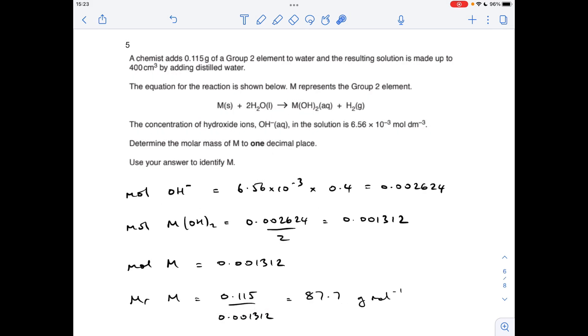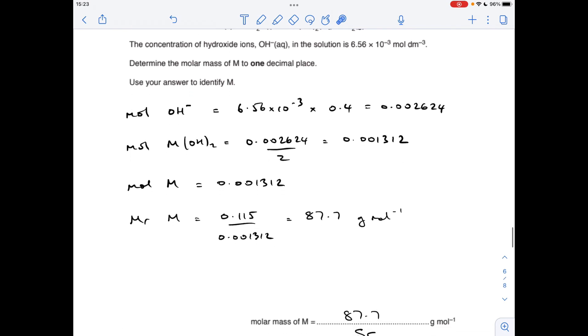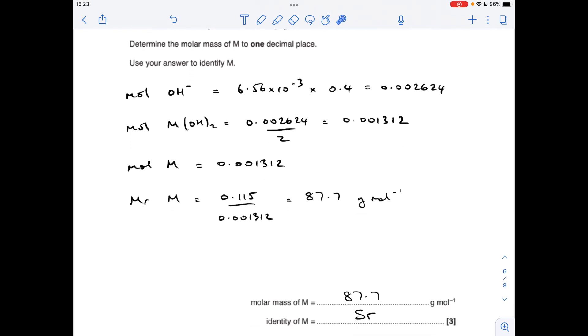Moving on to number five now. The first thing I'm going to do is work out how many moles of hydroxide ions there are in the solution—that's just concentration times volume in decimetres cubed. The moles of MOH2 is going to be half that. That's going to be the same as the moles of M—the ratio is just one to one there. So the MR of M is going to be mass over moles: 87.7 grams per mole. So that's one of the answers we've got to give. Therefore, you look in group two and it's strontium.